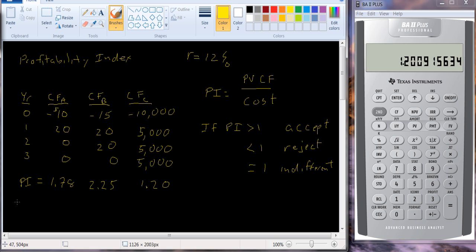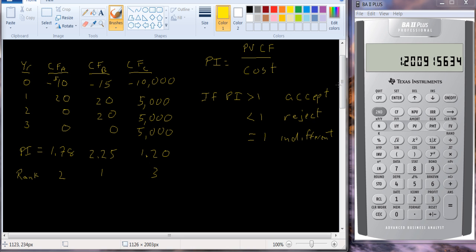So if we were to rank these based on the profitability index, this would be ranked 1, 2, and 3. So if we were choosing to do the projects, we would want to choose B first, A second, and C third.